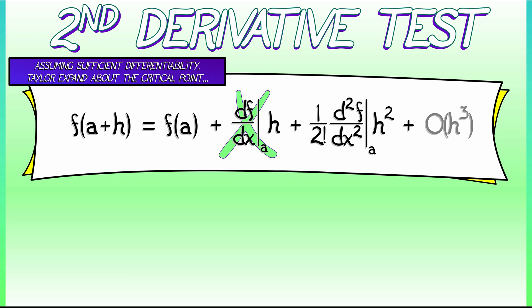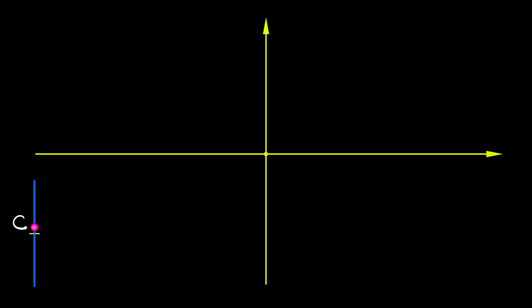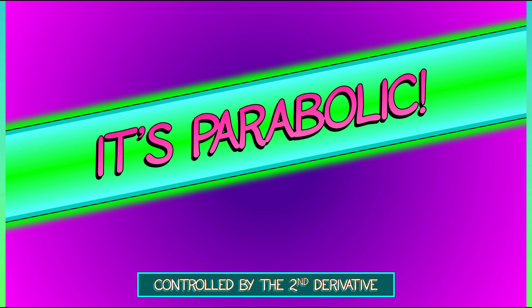We have a function that looks like a constant plus some other constant times h squared. That is parabolic. That is the formula for a parabola. And what controls whether that parabola opens up or opens down is the coefficient in front of the second order term. What is that coefficient? Ah, it's the second derivative.